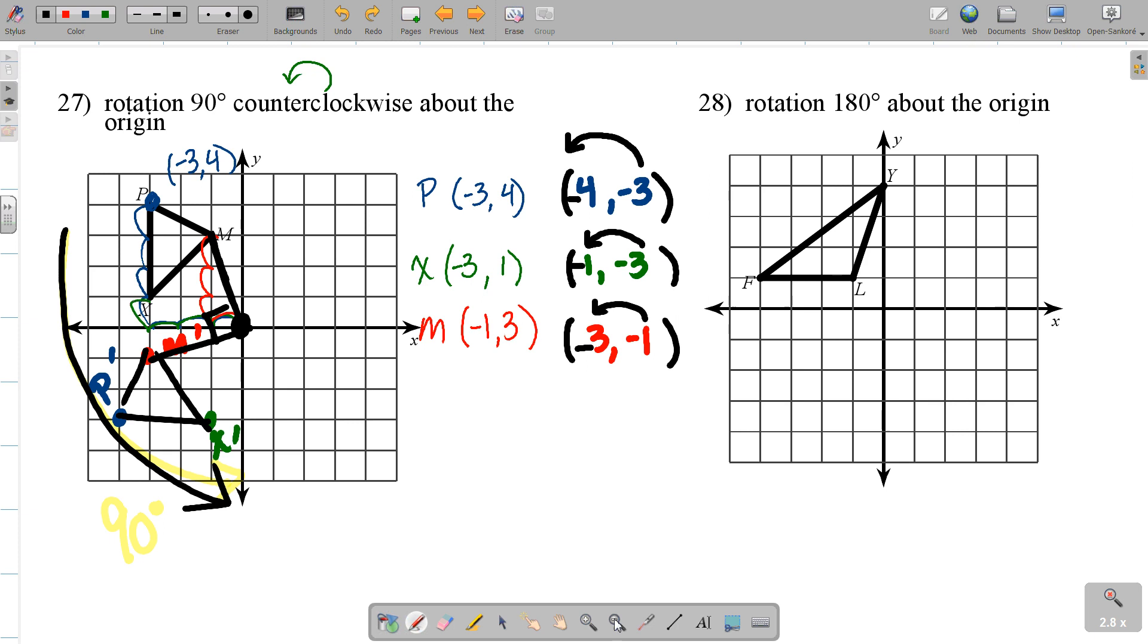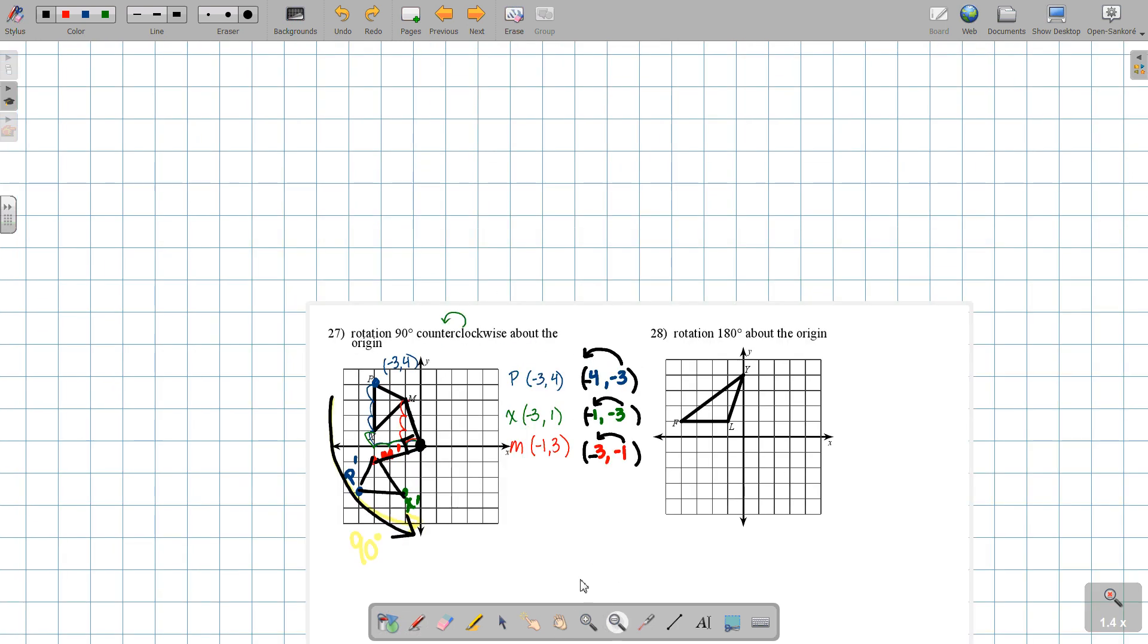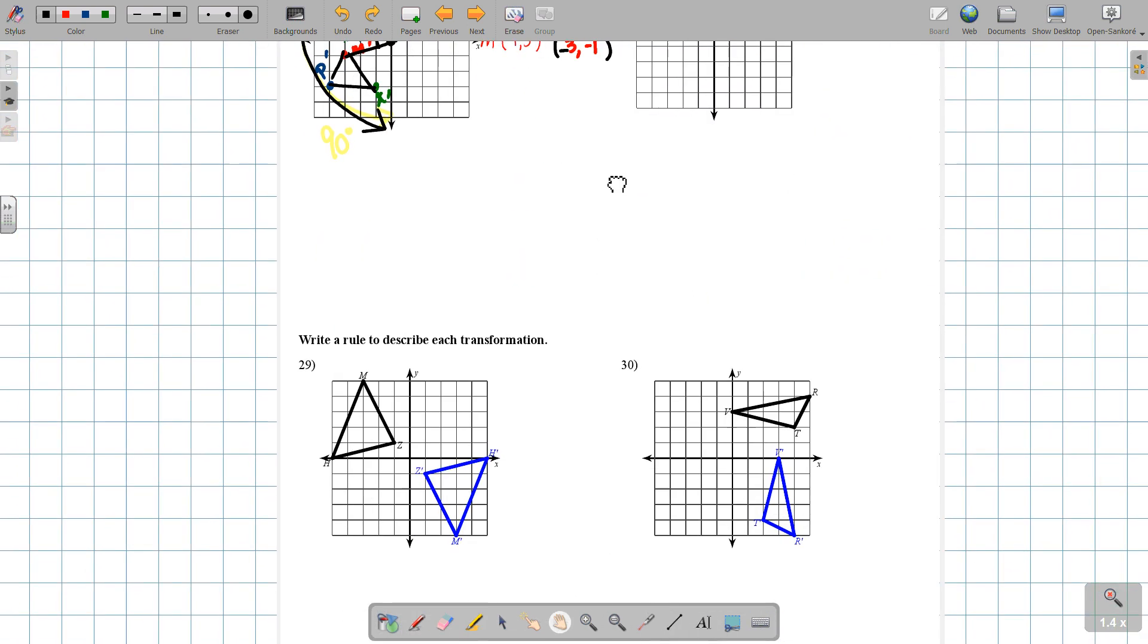Do the same for 28. For 29 and 30, you try to figure out what rotation, reflection, or translation is going on there.